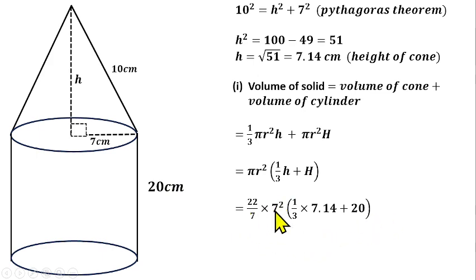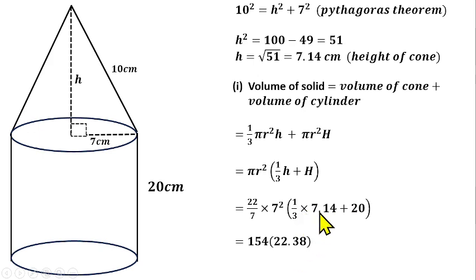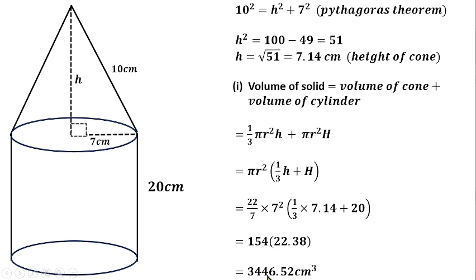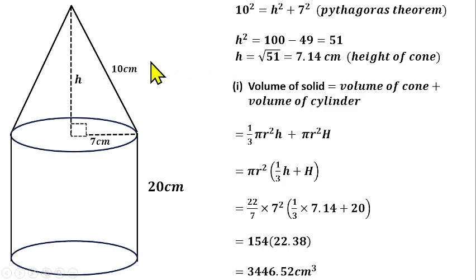Seven cancels with seven, giving us 22 × 7 = 154. Simplifying the bracket: 7.14 ÷ 3 = 2.38, plus 20 gives 22.38. So 154 × 22.38 gives us approximately 3446.52 cm³ as the volume of the solid, obtained by adding the volume of the cone plus the volume of the cylinder.